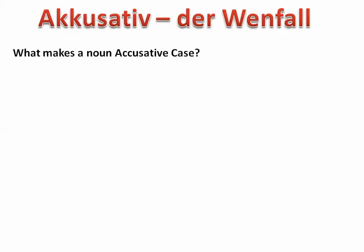So what makes a noun Accusative? Rule number one: remember that Accusative is the direct object of a sentence. It's sometimes called the direct object case, just like the Nominative is sometimes referred to as the subject case.